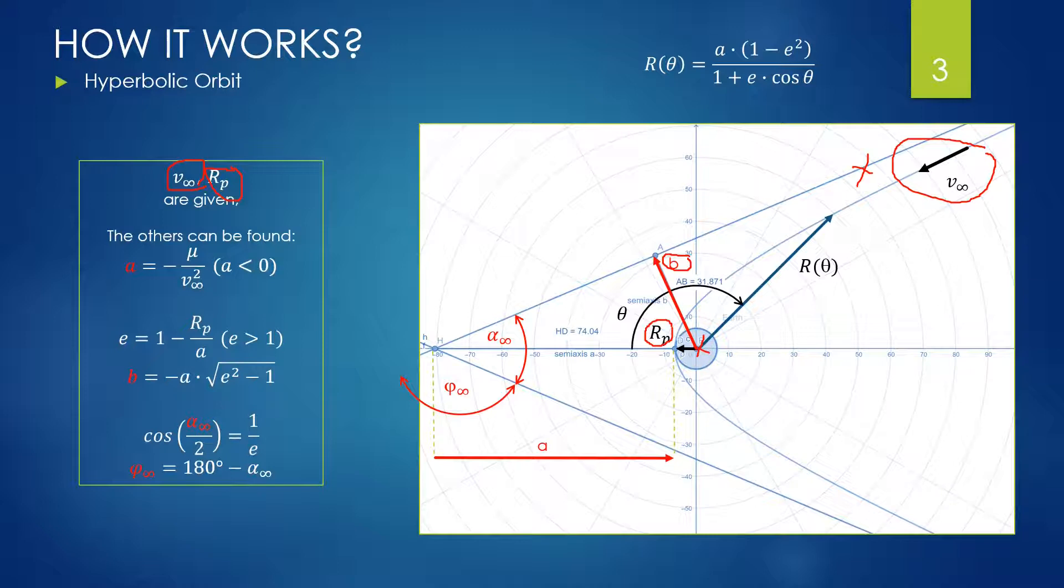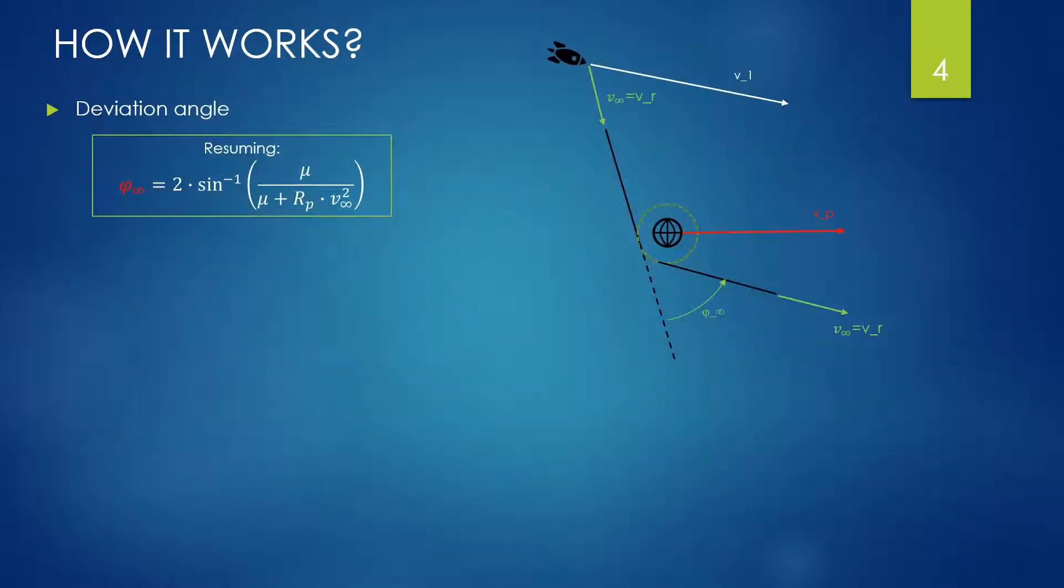The remaining parameters defining the hyperbolic orbit can be found here: A, the major semi-axis, E, the eccentricity, B, its impact parameter, and the angles A infinite and phi infinite. Phi infinite is the most important parameter for us, defining the deviation angle. By combining the formulas we come to an expression of the deviation angle as a function of V infinite and RP. We observe that the deviation is higher the less the velocity and distance from the planet, and the more the mass of the planet by means of the gravity constant mu.